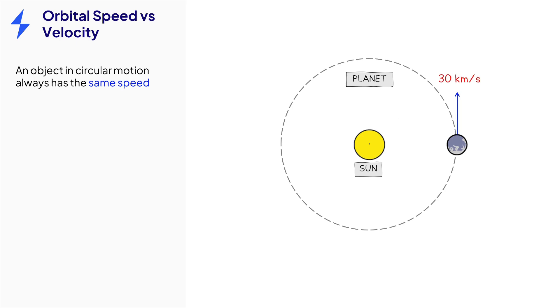Any object moving in uniform circular motion has constant speed. The direction of that speed, however, is always changing. So the velocity is changing.